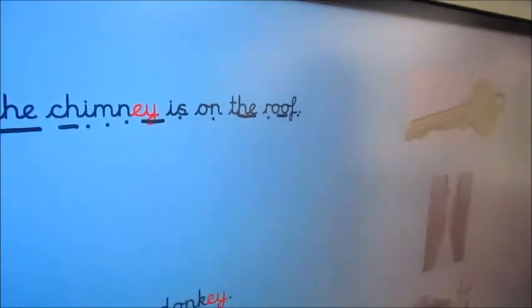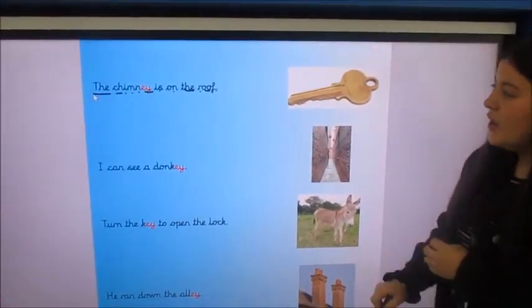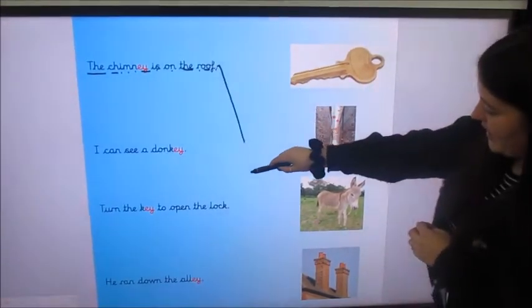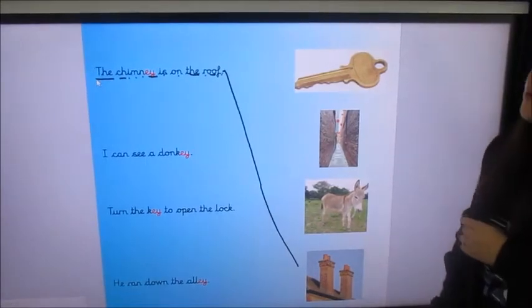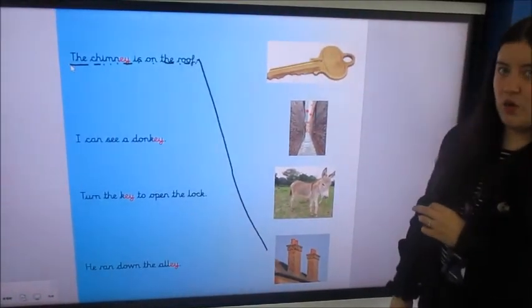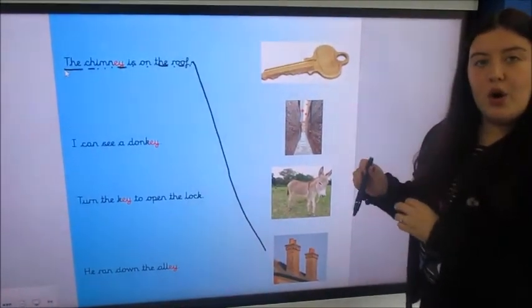Well done if you've read that sentence. So on your whiteboard or on your piece of paper, you need to now draw a line from the sentence all the way to the picture of the chimney. And I would like you now to have a go at the next three sentences all by yourself. So read them, look at the picture, match them up.